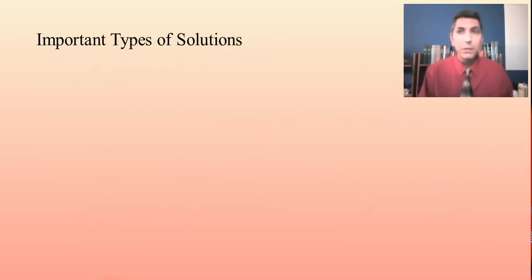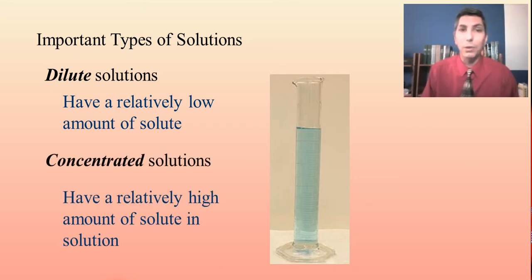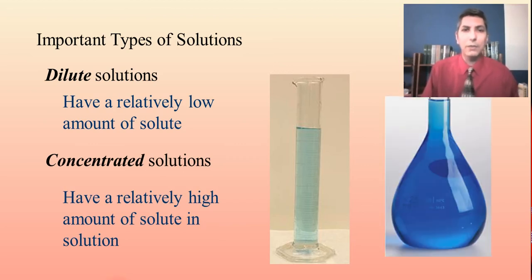Now, as we talk about important types of solutions, we can talk about dilute solutions. Dilute solutions have a relatively low amount of solute. So in a solution like the copper sulfate that we have here, it's going to be fairly pale in color compared to something that's more concentrated. Concentrated has a relatively high amount of solute in solution. So here's the same one we had earlier. We can see that they have deeper colors if they're concentrated. So we have a good example of that there.